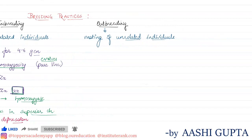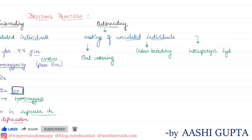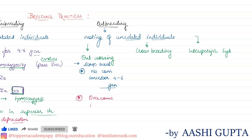Now let us move towards outbreeding, which is of three different kinds. The first one is outcrossing — mating of individuals of the same breed but having no common ancestor up to four to six generations. A single outcross may help in overcoming the inbreeding depression.